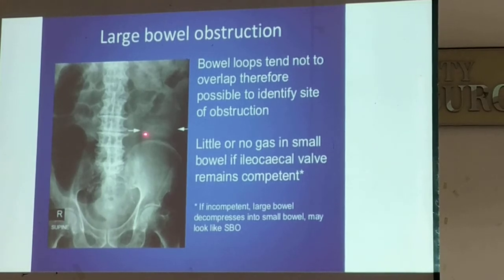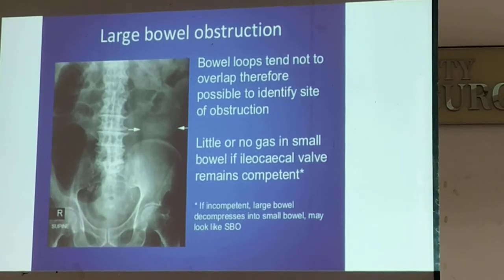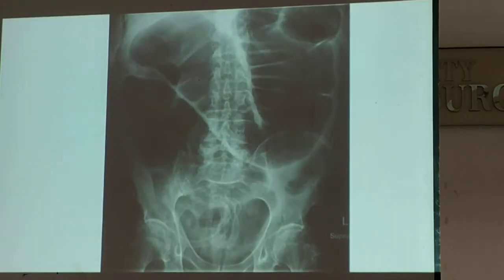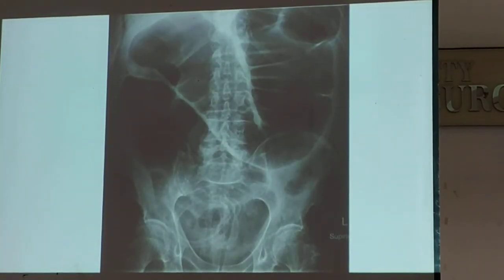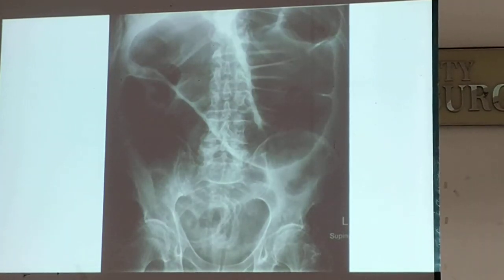This is your large bowel. The diameter is bigger — it is 5 cm. In obstruction, it goes beyond 8 cm. So you would see what looks like a megacolon.